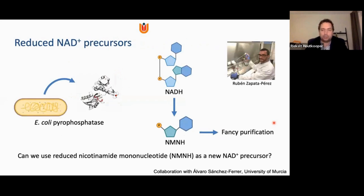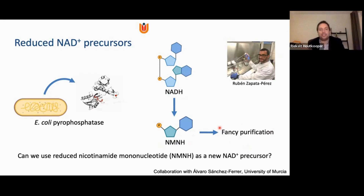This is when a postdoc — Ruben Zapata-Perez, who was a PhD student at the time and now leads his own group at the University of Murcia in Spain — joined our lab. He's an enzymologist and biochemist by training. He came up with a procedure of using NADH as a molecule, incubating it with a pyrophosphatase from E. coli to generate NMNH, which is another NAD precursor. He then used a fancy purification technique to isolate pure NMNH. The question was: can we use NMNH as a precursor for NAD?